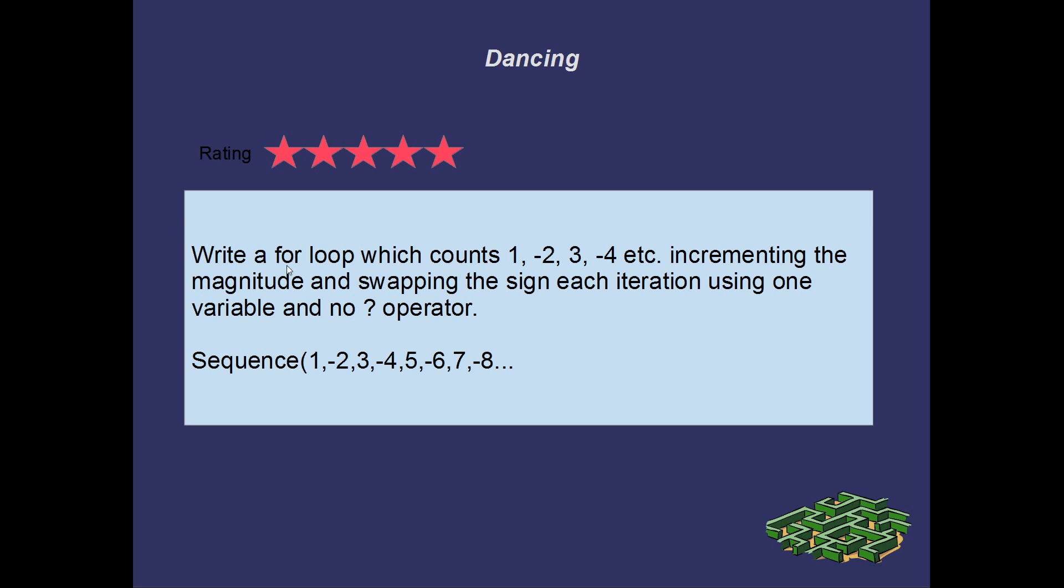Another 5 star puzzle. Here we go. This is hard as well. Or I found it difficult. But good luck to you. Maybe you'll find a really easy answer. I've called this puzzle dancing. I don't really know why, but I just thought it was a pleasant name, so that's what I called it. Or dancing, I should say. Dancing. Prancing. Write a for-loop which counts 1, negative 2, 3, negative 4, etc. Incrementing the magnitude and swapping the sign each iteration. You can only use one variable and no comparison operator in C++. Yeah, it suddenly struck me one day that a lot of these problems are really easy to solve with this operator, so you're not allowed to use that for dancing. But the sequence that you're after is this one. So 1, negative 2, 3, negative 4, 5, negative 6, 7, negative 8, that'd be 9, negative 10, etc, etc. It's tricky. It's quite tricky. For such a simple pattern, it's hard to get the for-loop to do it. With a single variable, anyway.